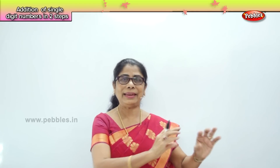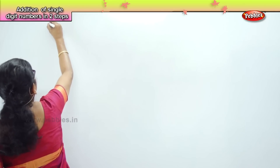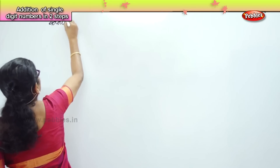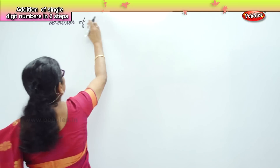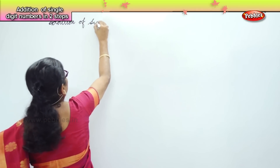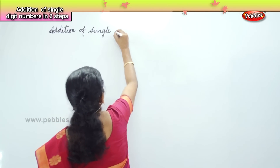The single digits are: 0, 1, 2, 3, 4, 5, 6, 7, 8, 9. Within these, what kind of addition can we do? We are going to look at addition of single digit numbers.